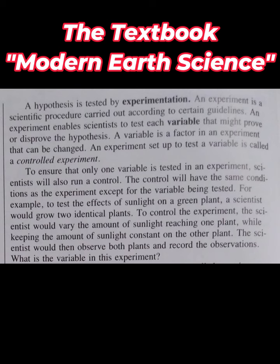A hypothesis is tested by experimentation. An experiment is a scientific procedure carried out according to certain guidelines. An experiment enables scientists to test each variable that might prove or disprove the hypothesis. A variable is a factor in an experiment that can be changed. An experiment set up to test a variable is called a controlled experiment.